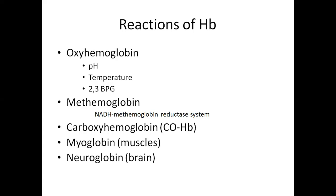Carboxyhemoglobin: hemoglobin combines with carbon monoxide. Carbon monoxide has 250 times more affinity to combine with hemoglobin. Hemoglobin is also present in the form of myoglobin in the muscles and in the form of neuroglobin in the brain.